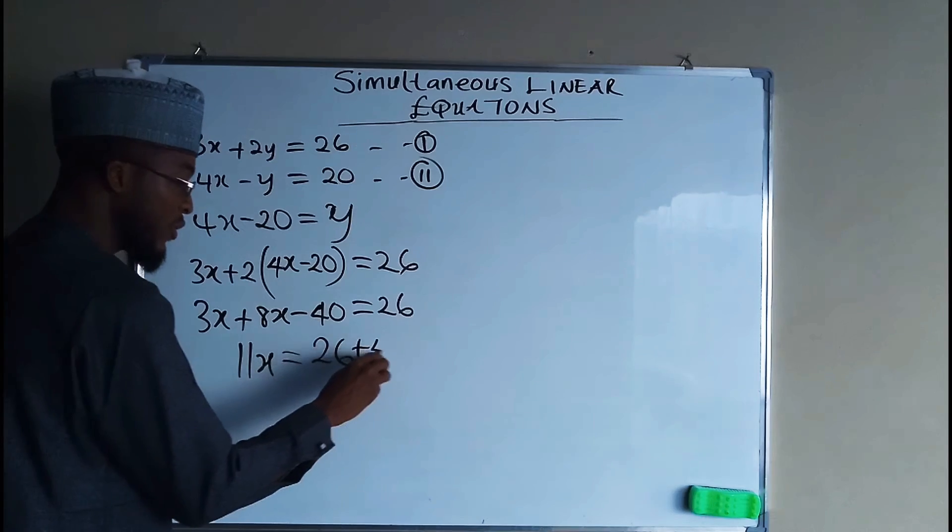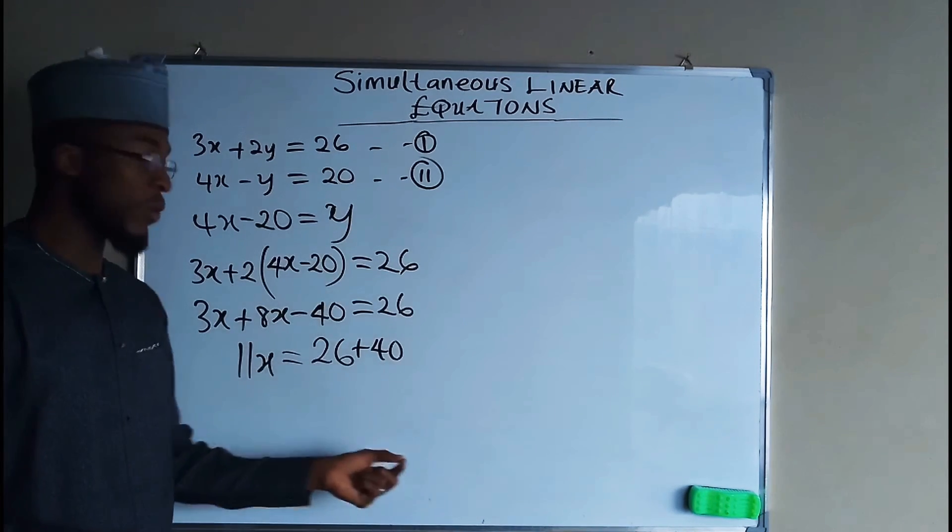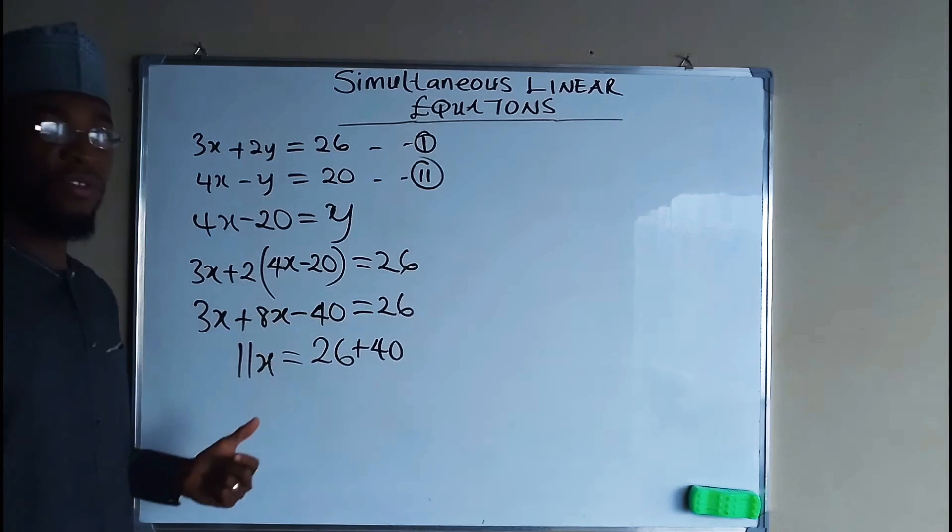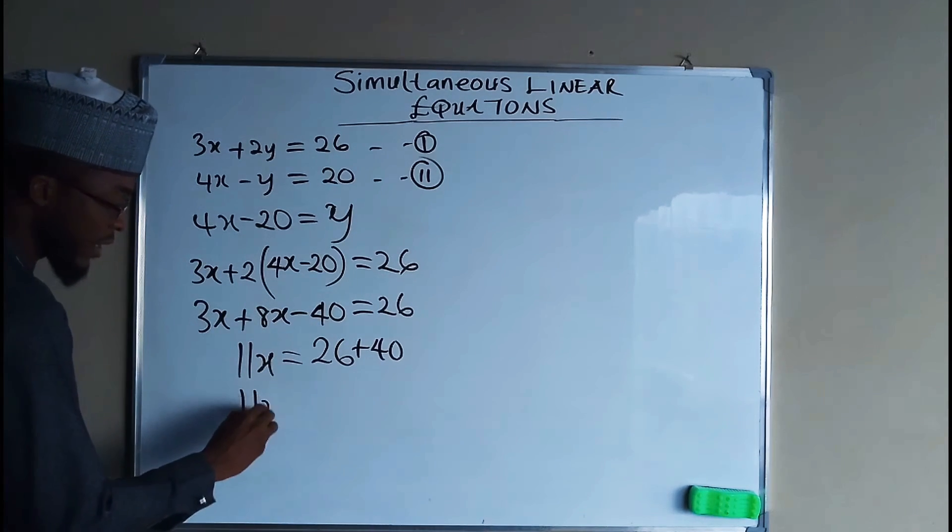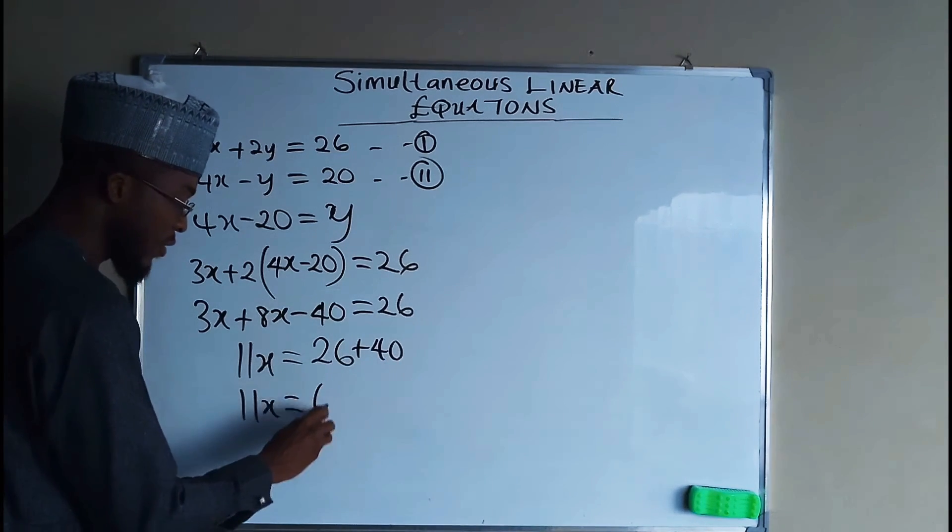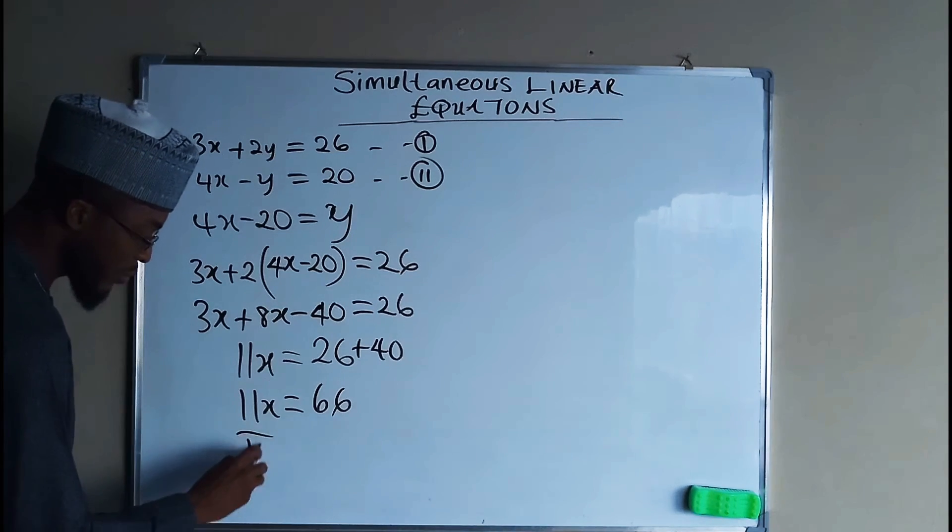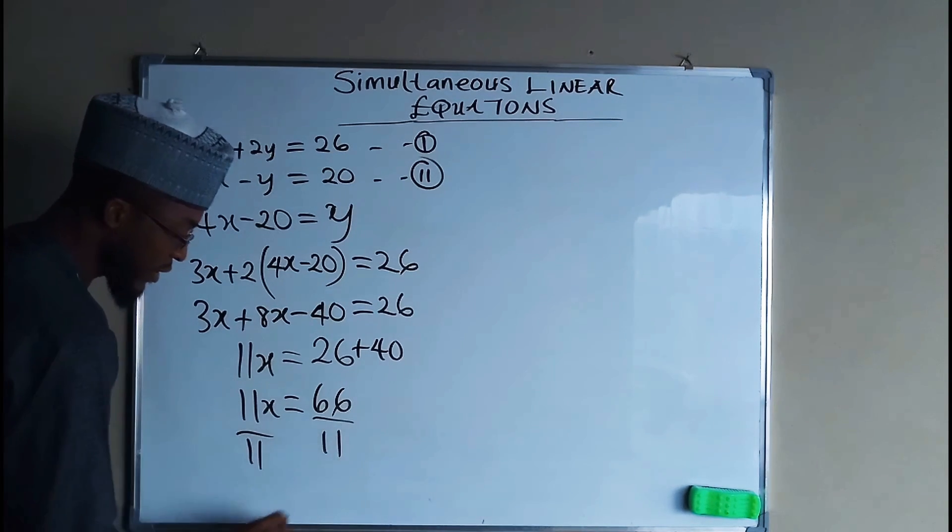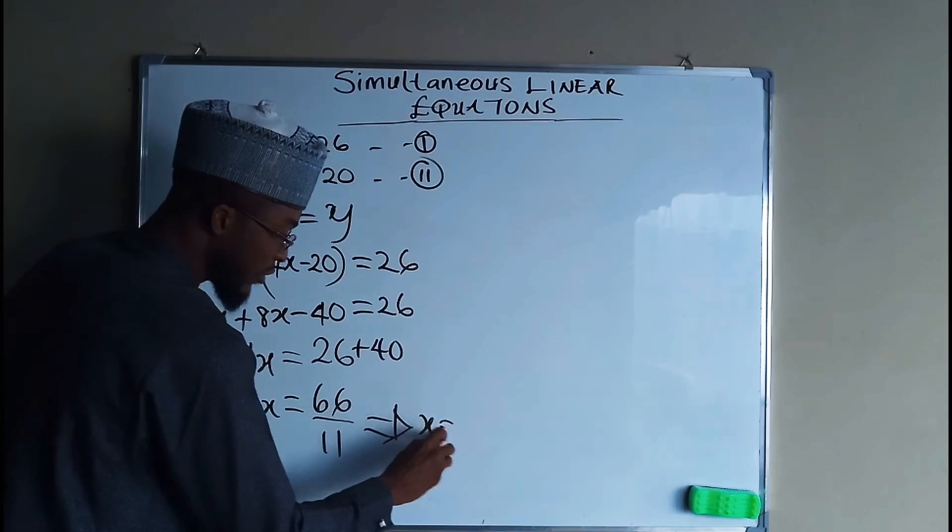Because when a term crosses equality sign, whatever sign is attached to that term will change to the opposite. So we end up having 11x to be equal to 26 plus 40, which is equal to 66. Now if we divide both sides by 11, x will be equal to 6 because 66 divided by 11 is equal to 6.